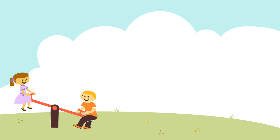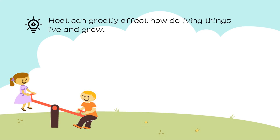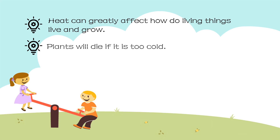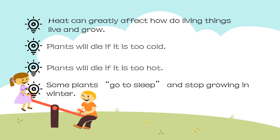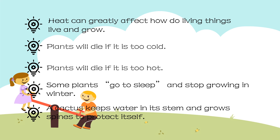Let us summarize everything in this lesson. Heat can greatly affect how living things live and grow. Plants will die if it is too cold. Plants will die if it is too hot. Some plants go to sleep and stop growing in winter. A cactus keeps water in its stem and grows spines to protect itself.